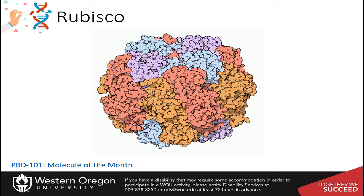Ribulose 1,5-bisphosphate carboxylase — also oxygenase — has a side reaction that is pretty reactive for this enzyme, one that the plant really won't want to have happening. This enzyme consists of eight large subunits and eight small subunits. Each large subunit contains a catalytic and a regulatory site, and the small subunits enhance the activity of the large subunits.